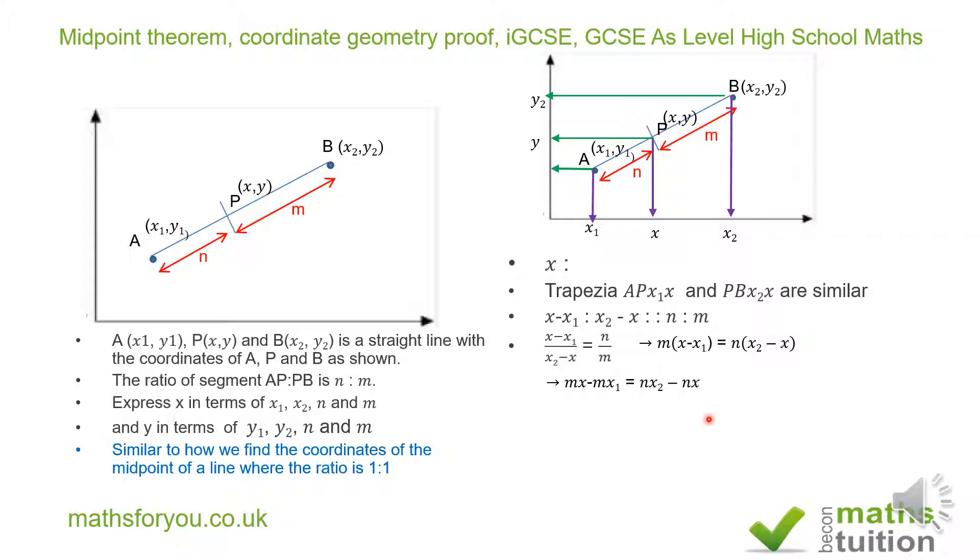If we then take n to the right hand side, we end up with mx plus nx is equal to nx sub 2 plus mx sub 1. Don't forget that when minus nx goes across to the left hand side, the sign will change. And when minus mx sub 1 goes across, the sign will also change. So we end up with mx plus nx is equal to nx sub 2 plus mx sub 1.